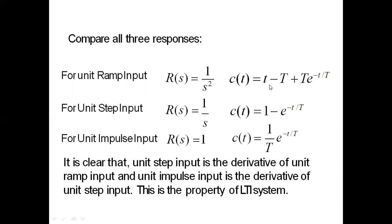Summarizing: for ramp input R(s) equals 1/s², c(t) equals t minus τ plus τe^(−t/τ). For unit step input R(s) equals 1/s, c(t) equals 1 minus e^(−t/τ). For unit impulse input R(s) equals one, c(t) equals (1/τ)e^(−t/τ). It is clear that the unit step input is the derivative of the unit ramp input, and the unit impulse input is the derivative of the unit step input. This is the property of an LTI system.